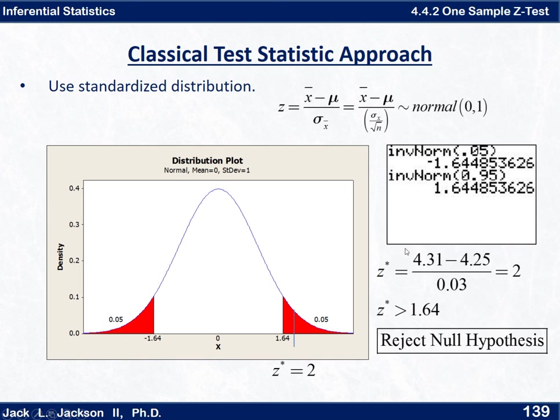Then we do our test statistic, which is a z-score from our sample. Our sample had a sample mean of 4.31 for our actual sample. We subtract the 4.25, which is our hypothesized population mean mu, and divide by the sigma of the x-bars, which was the sigma of x divided by the square root of n. That's our 0.12 divided by the square root of 16, which is 0.03. Work that out and we get a z-star of 2. And we see that 2 is in the red region, and so that is enough to reject the null hypothesis. So that's the basic approach for the classic test statistic approach.